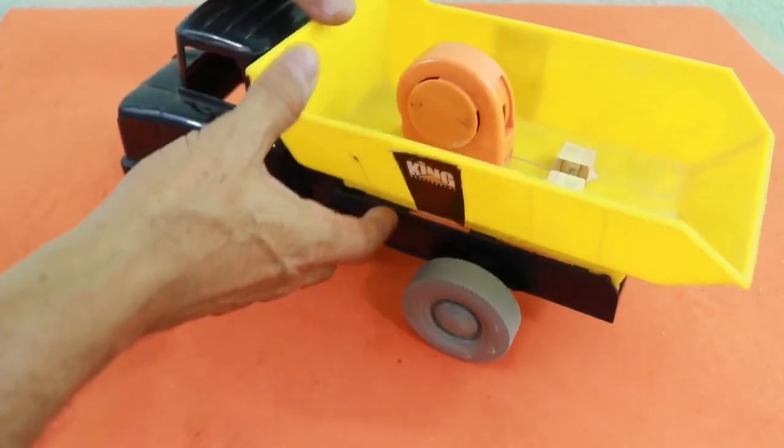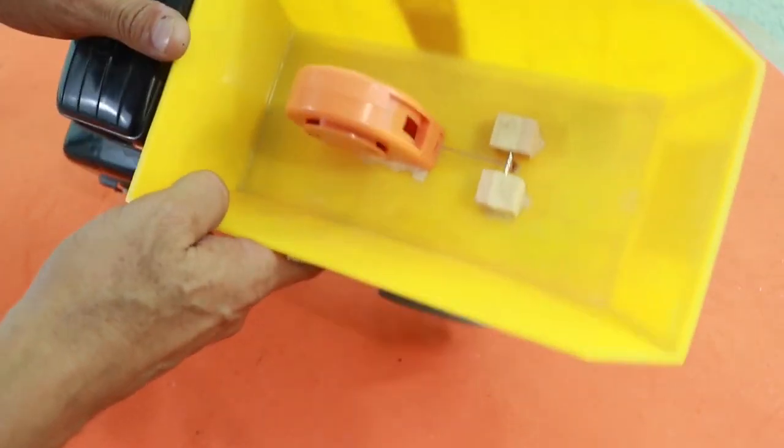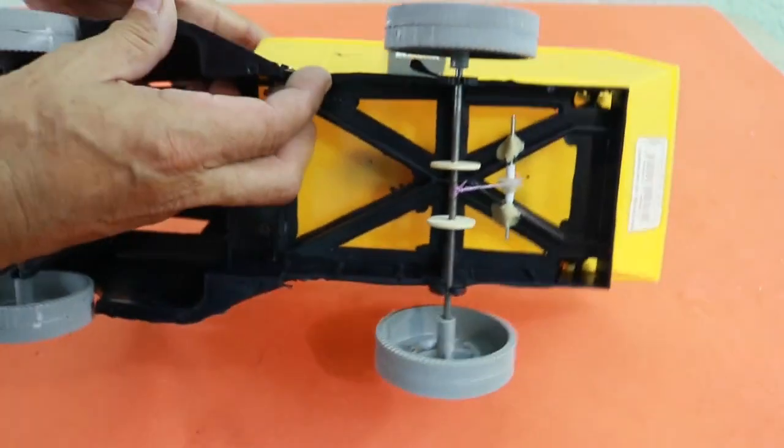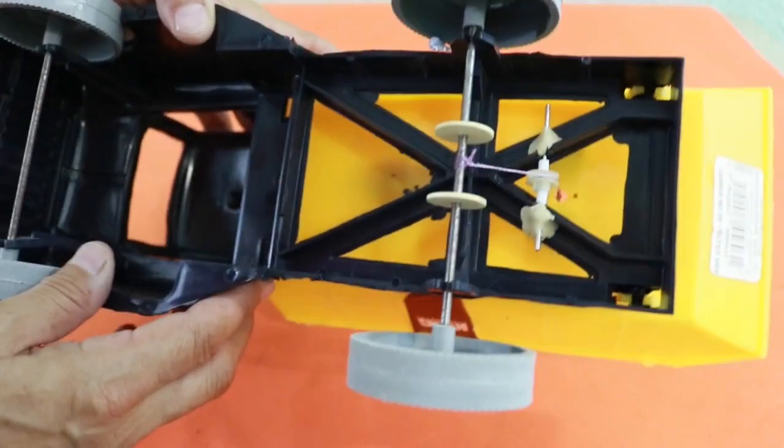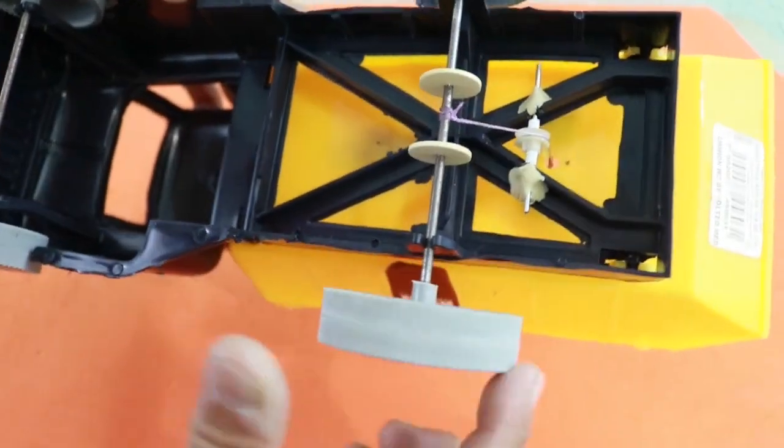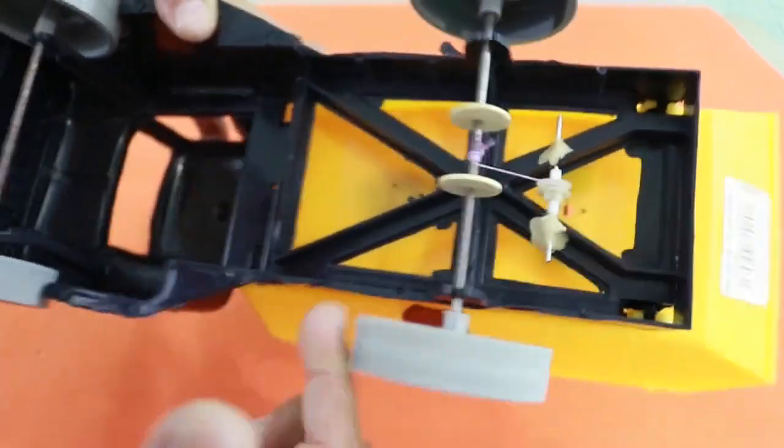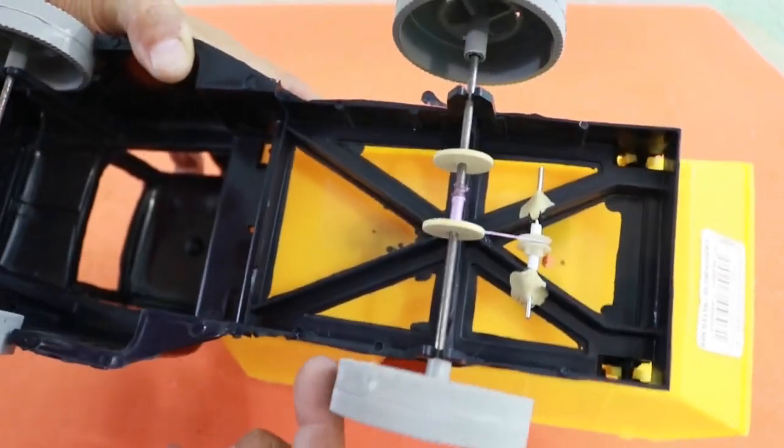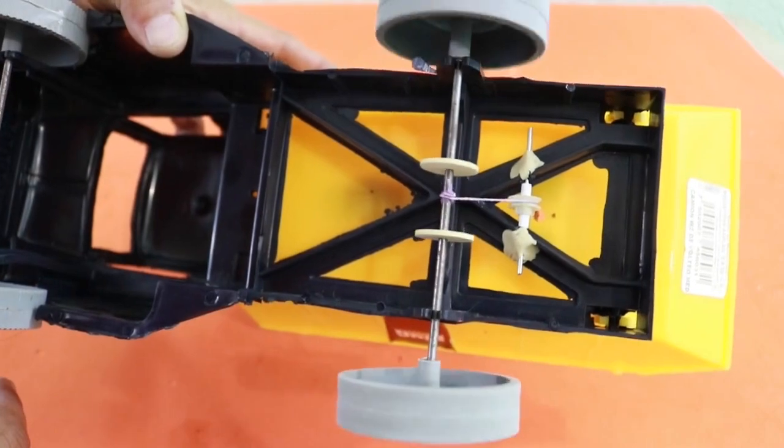Okay, so it is ready. As you can see, here is the thread that goes to the rear axle. Therefore, when we make the axle turn, the thread winds in the axle and moves the wheels.